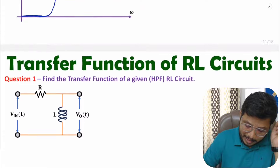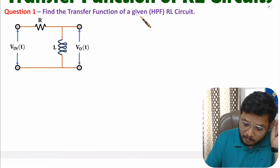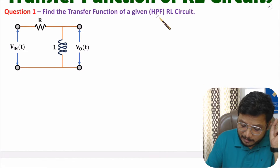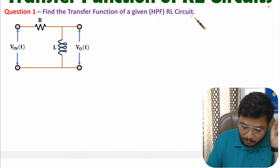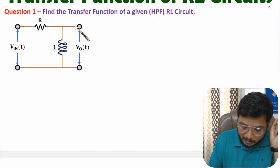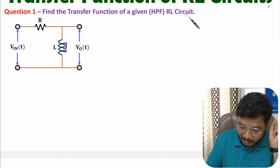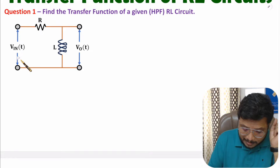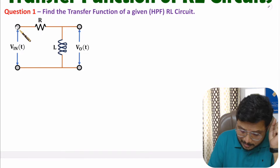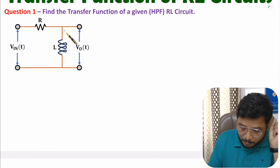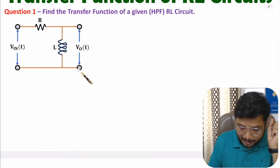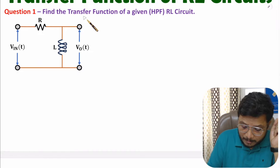Let us have question one, based on the transfer function of a high pass filter RL circuit. With a high pass filter RL circuit, the input is connected in series with the resistor, and we take the output across the inductor.